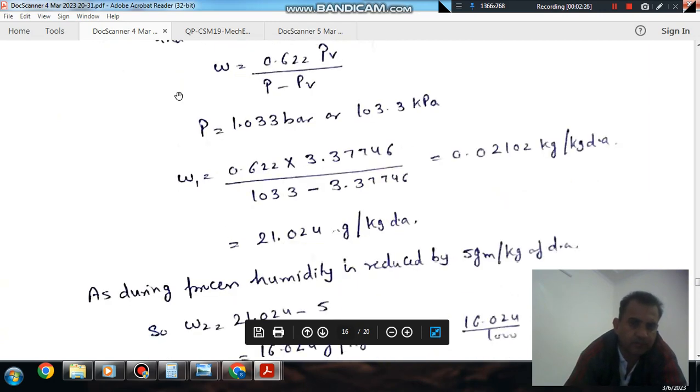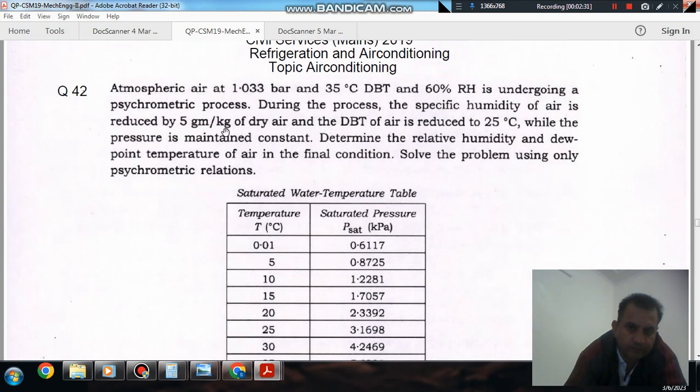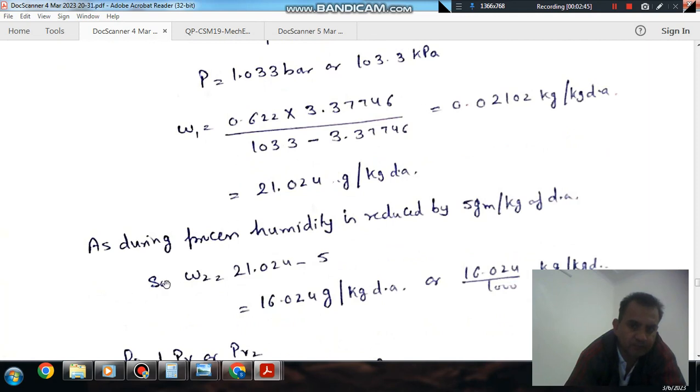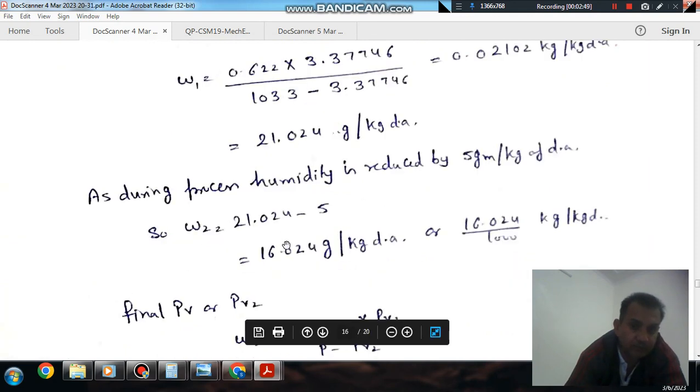Now, in the process, the specific humidity of the air is reduced by 5 g per kg of dry air. So it means we will subtract 5 from the initial specific humidity, and then we can get the final specific humidity. So that will be 16.02 g per kg of dry air or 0.01602 kg per kg of dry air.